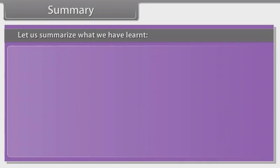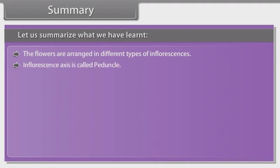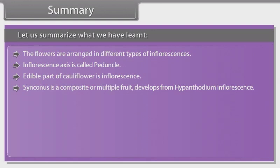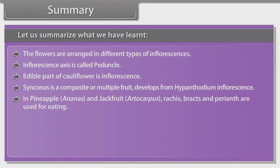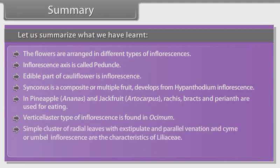Summary: The flowers are arranged in different types of inflorescences. Inflorescence axis is called peduncle. The edible part of cauliflower is inflorescence. Synconium is a composite or multiple fruit that develops from hypanthodium inflorescence — in pineapple (Ananas), jackfruit (Artocarpus), bracts and perianth are used for eating. Verticillaster type of inflorescence is found in Osmium. Simple cluster of radical leaves with exstipulate and parallel venation and cymose or umbel inflorescence are characteristics of Liliaceae. In family Gramineae, inflorescence is spikelet.